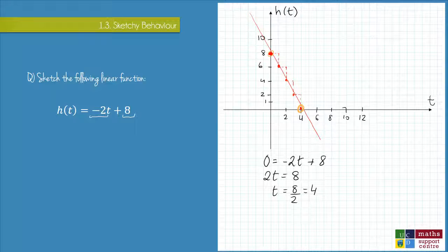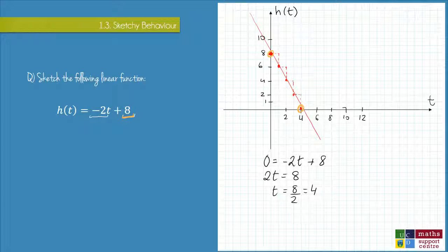We can just mark our h-intercept, which we can read directly from the equation, and to find a second point, we set the output to be zero and solve for t to find the t-intercept.